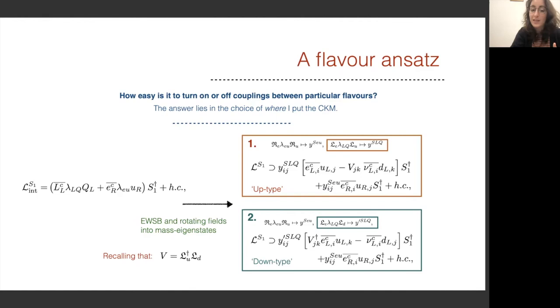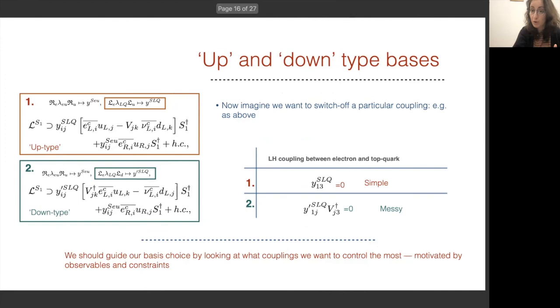Because of that, we have a little bit of freedom when we talk about what we're rotating and how we're rotating it. One can think of the uptype basis as the basis that refers to us specifying a particular value of the coupling matrix that refers to the coupling between the charged lepton and the standard model uptype quark. Then we allow the neutrino and downtype quark interaction to be generated by the CKM. In the downtype quark basis, we specify a value for the downtype quark neutrino coupling, and we allow the other coupling to be generated again by the CKM. So these are what we term the uptype or the downtype bases.